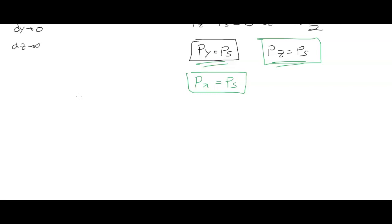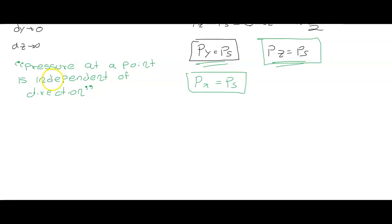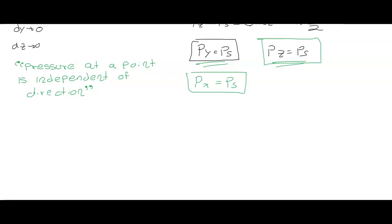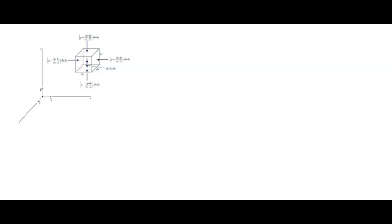So that's everything about the pressure point. The key result: pressure at a point is independent of direction. Now I want to demonstrate how to find the pressure of a field, and for that I'll use another image from the same book — I'll put a reference in the description.